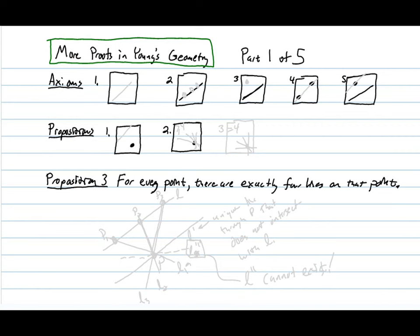Axiom 1 says that there is a line in the geometry. Axiom 2 says that each line in the geometry contains exactly three points. Axiom 3 says that not all points in the geometry are on a single line, so given a line, there must be some point off of it.